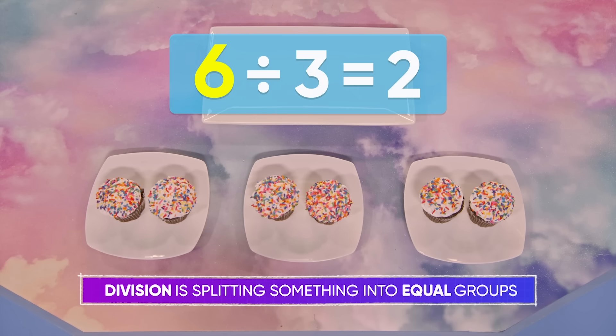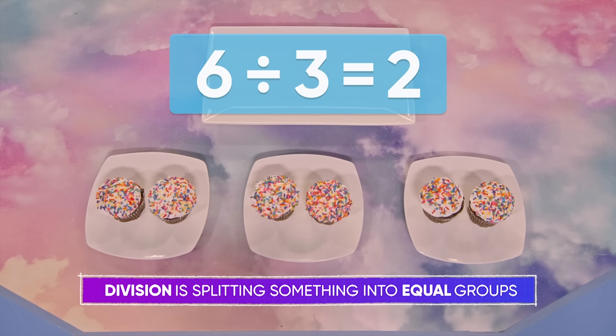So six is how many you started with. Three is how many groups you made. And two is how many are in each group. You got it.